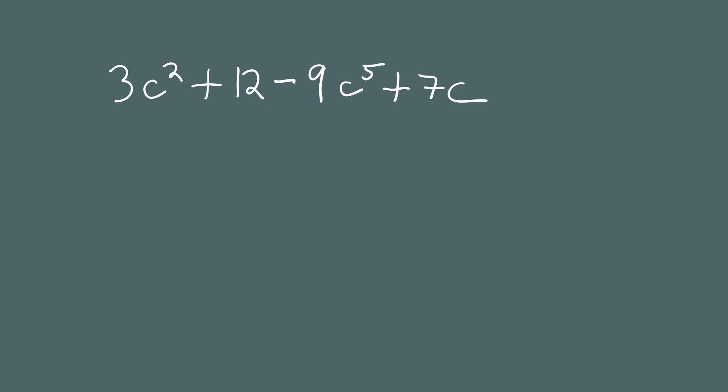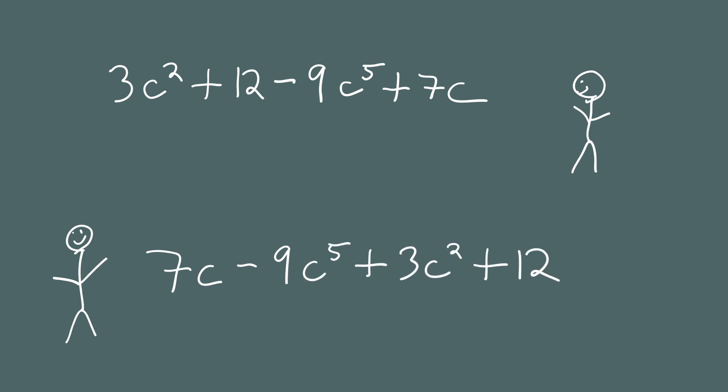This polynomial has four terms, and there are actually 24 different ways you could write it. Imagine you're working on a math problem and you want to compare your answer with a colleague. You got 3c squared plus 12 minus 9c to the fifth plus 7c, and your colleague got 7c minus 9c to the fifth plus 3c squared plus 12. You said different things out loud — so did you get the same answer or not?